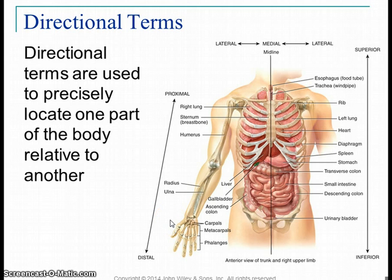You'd also see anterior-posterior and dorsal-ventral. Anterior means towards the front; ventral means stomach side — so anterior and ventral in humans are interchangeable. Posterior and dorsal mean to the back — like a dolphin has a dorsal fin on its back. You can also see contralateral and ipsilateral. Ipsilateral means two things are on the same side — your gallbladder and liver are ipsilateral. Whereas your gallbladder and spleen are contralateral — they're on opposite sides.